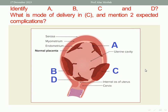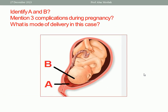Let us go to the next. Look at this picture, please, and identify A and B. Then mention three complications during the pregnancy and the mode of delivery in this case. A: placenta previa, complete centralis, or complete placenta previa. B: cephalic presentation, vertex presentation, of the fetus.